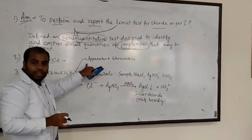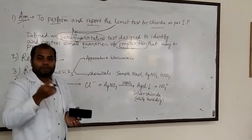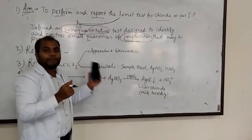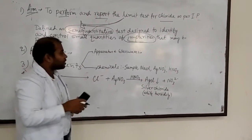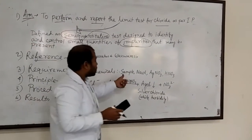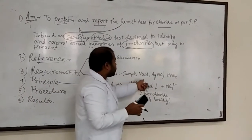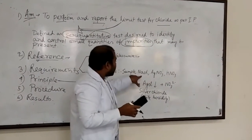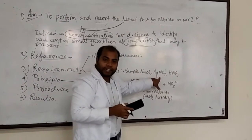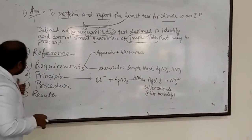Under requirements, there are two sections: apparatus and glasswares — including test tubes, measuring cylinders, glass rods, and a weighing balance — and chemicals. We will take the sample for the limit test along with other chemicals like sodium chloride, which acts as the standard compound, silver nitrate as a reagent, and dilute nitric acid also used as a reagent.